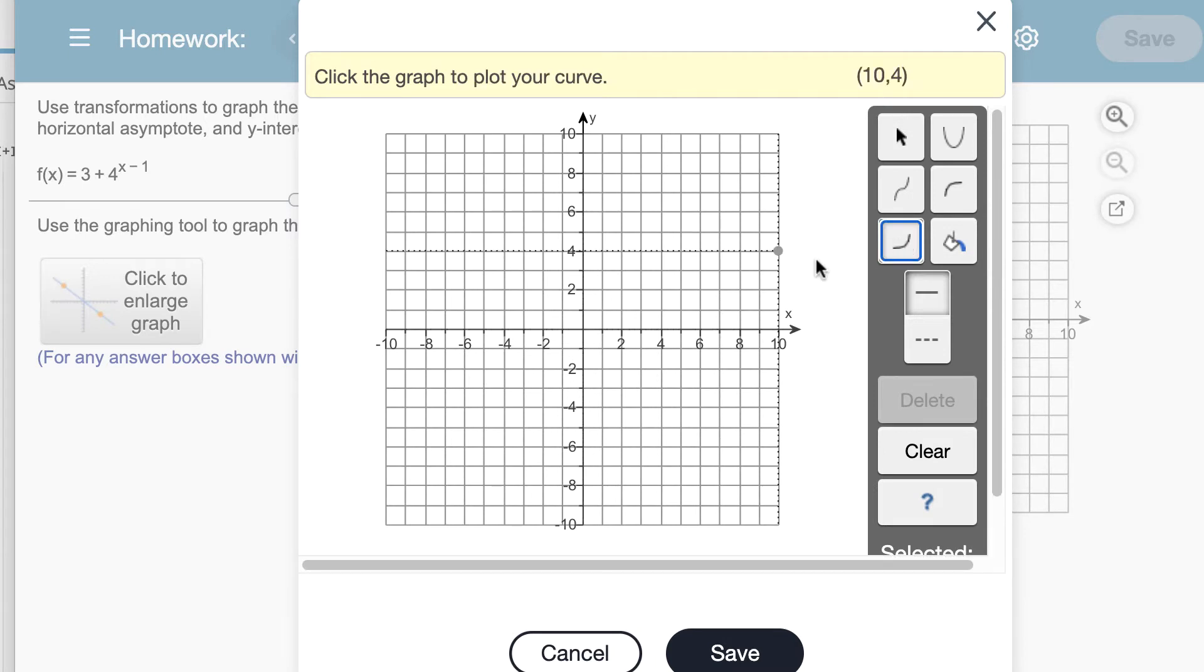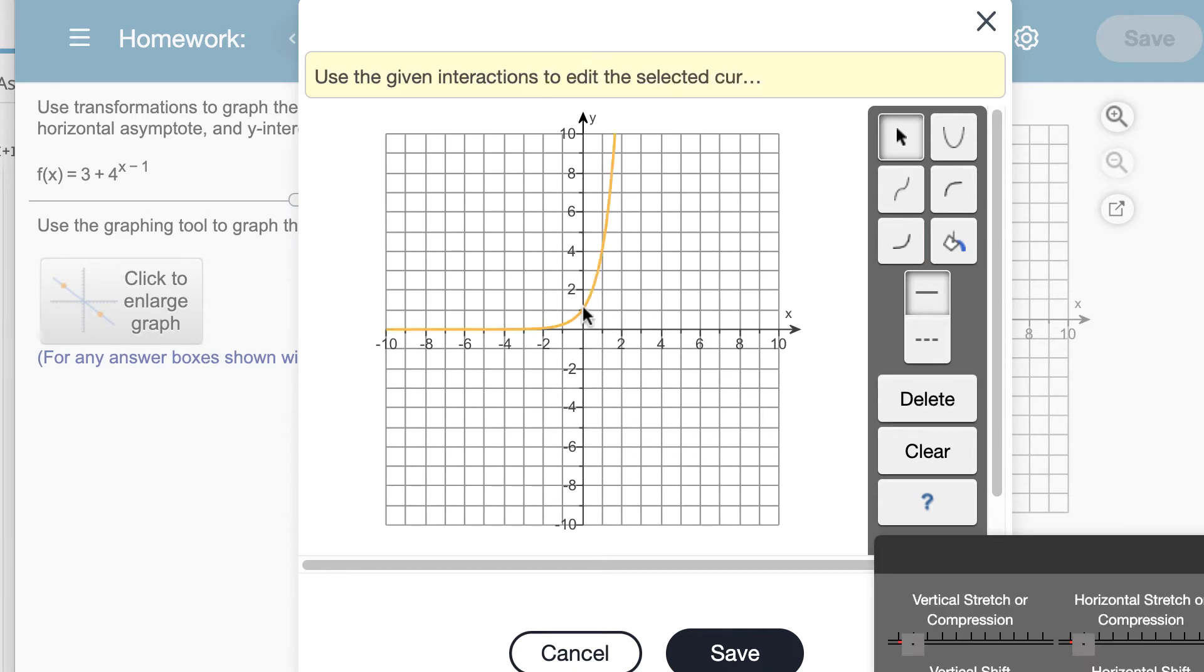The basic exponential function always passes through the point (0,1). That's its y-intercept. So I'm going to click that point, and then I'll translate the graph from there.